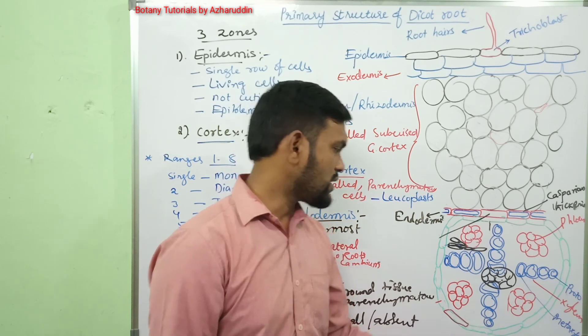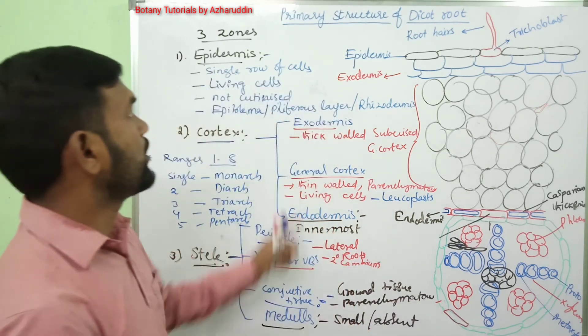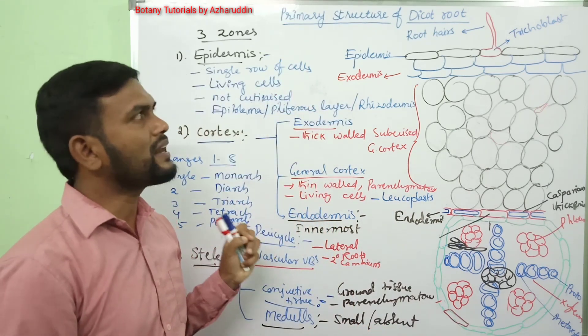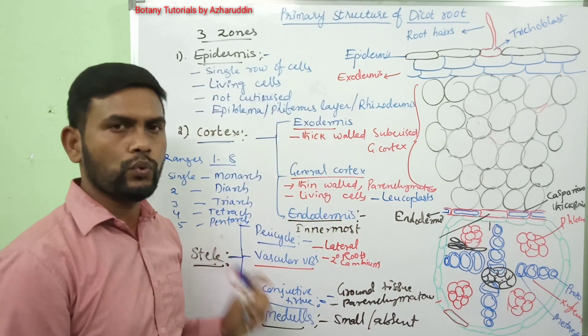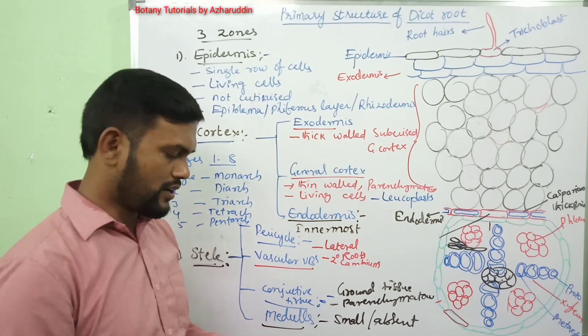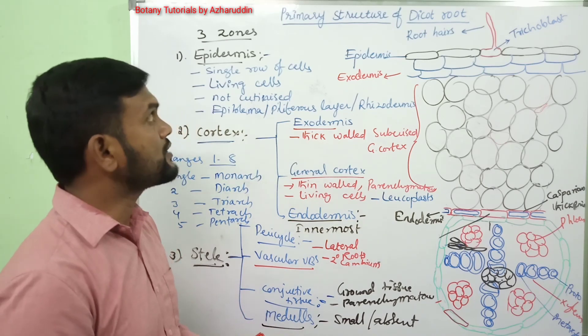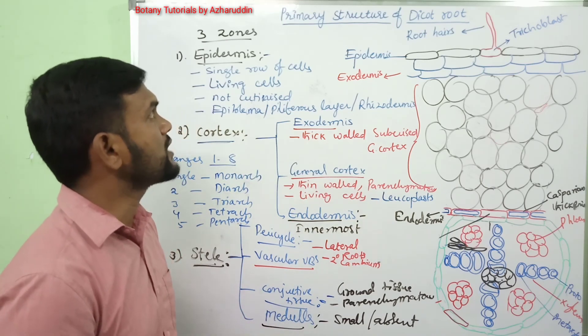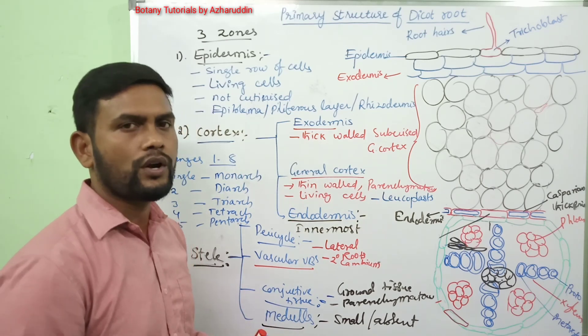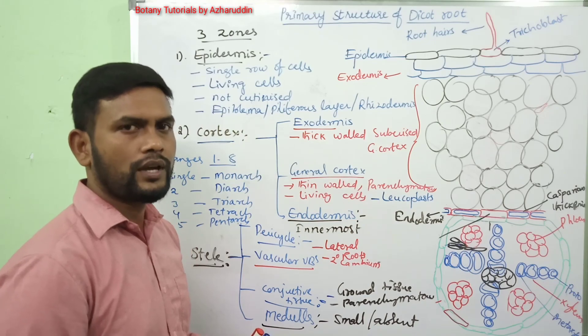This is about the internal structure of primary dicot root. In the next class, I will come with another topic — that is, the primary structure of monocot root. Thank you.